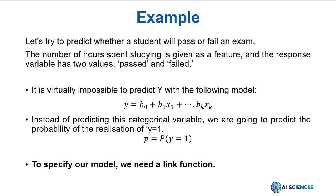In the equation below, you can see that we need to predict the y variable, which can take two values: 0 or 1, 0 for failed and 1 for passed. It turns out that it is virtually impossible to predict y with the following model: y equals b0 plus b1x1 plus dot dot dot bk xk. That's because y is a categorical value, and the equation will give a continuous value as the result.